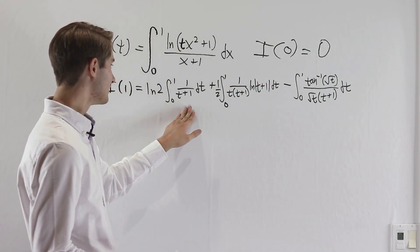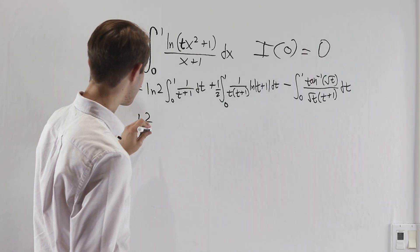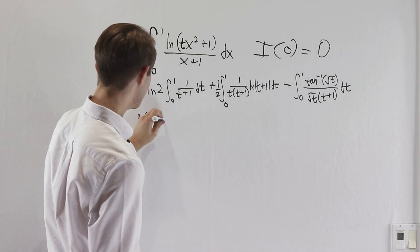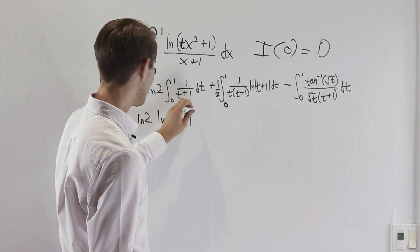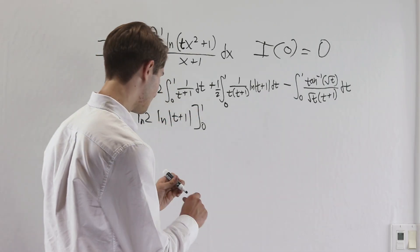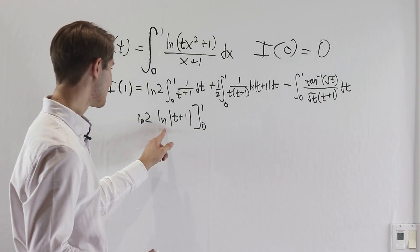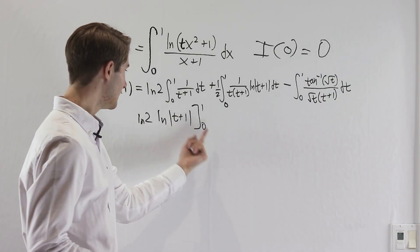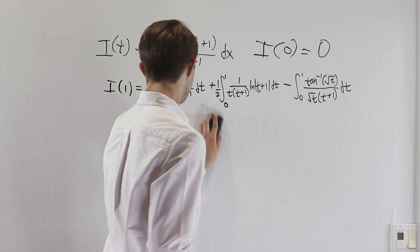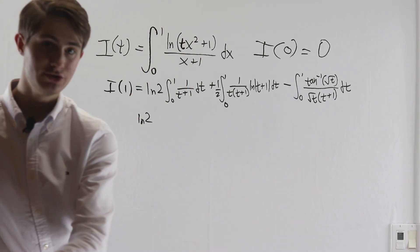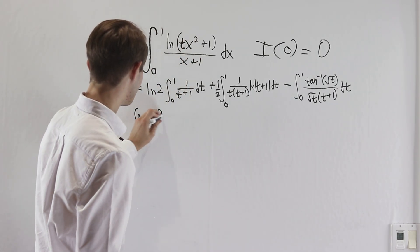The first part is again easy. Integrating the natural log of 2 times 1 over t plus 1 with respect to t from 0 to 1 gives natural log 2 times the natural log of absolute value of t plus 1 evaluated at 1 and 0. We get natural log 2 times natural log 2, which is natural log 2 squared.